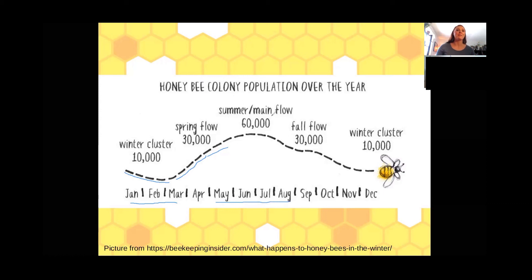Our main flow — the main nectar flow or honey flow when the bees are out getting nectar to change into honey — is happening in July and August. We're going to see the biggest population of bees at that time. I've read there can be up to 85,000 bees in the beehive. That's a lot of bees.